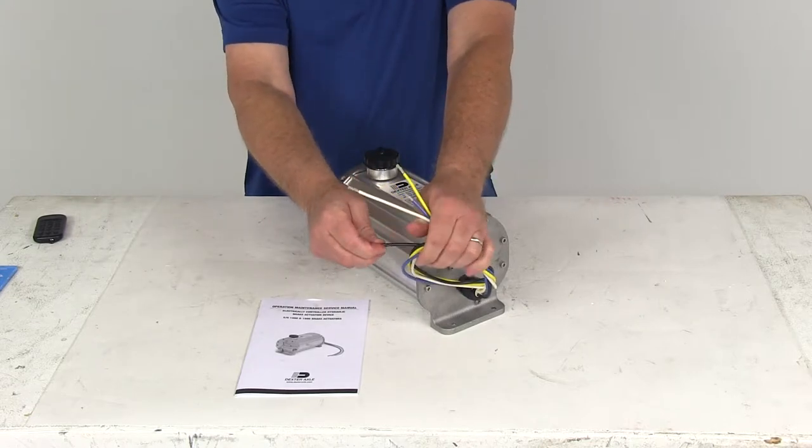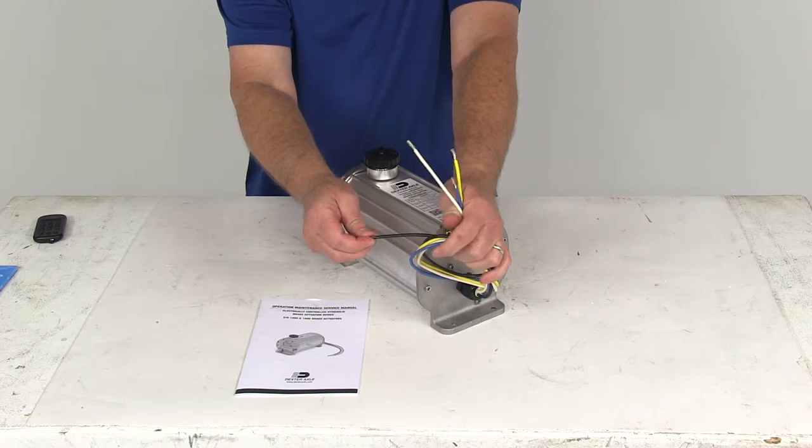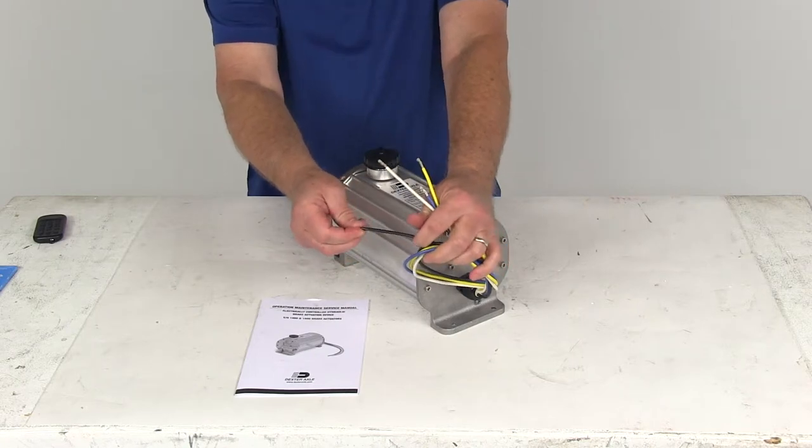The black wire goes to the positive connection on the breakaway switch, and that's the wire that charges the breakaway battery.